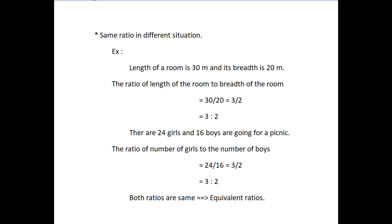See another example. There are 24 girls and 16 boys going for a picnic. The ratio of the number of girls to the number of boys equals 24 divided by 16 which equals 3 by 2 which equals 3 is to 2. Both ratios are same, that is 3 is to 2. Note the ratio 30 is to 20 and 24 is to 16 in lowest term are same as 3 is to 2. These ratios are known as equivalent ratios.